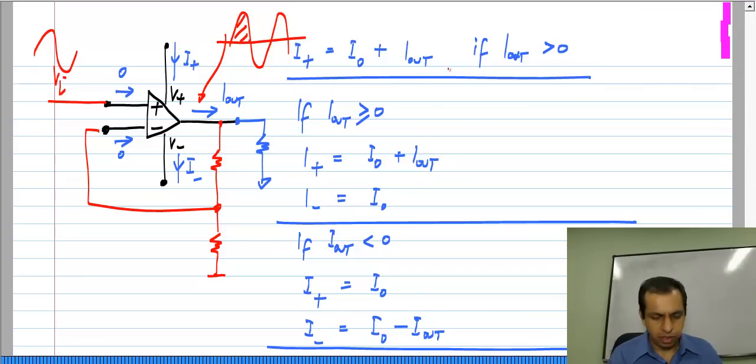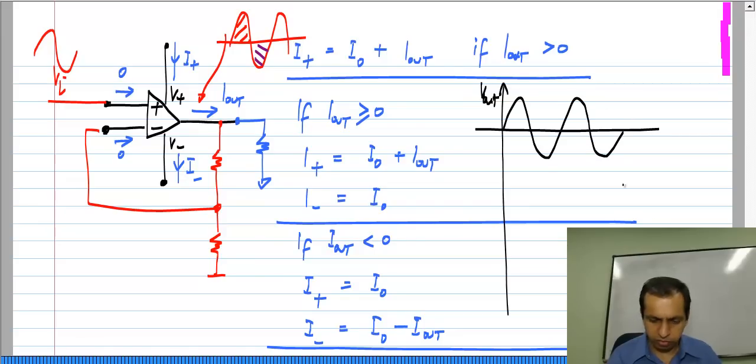During these parts Iout will be positive, and during those parts Iout will be negative. So what happens is that in such a case, let us say Vout swings positive and negative and positive and negative, then I plus will be following the sinusoidal current. Because the voltage is sinusoidal, the current is also sinusoidal. I plus will be following this current, and when the output current is negative it will just be the fixed value I naught, and then it will follow this and so on.